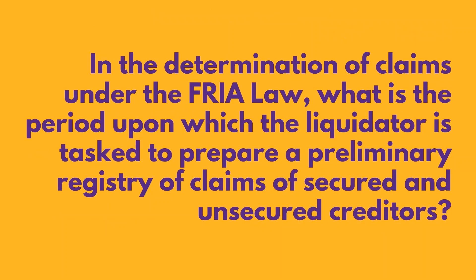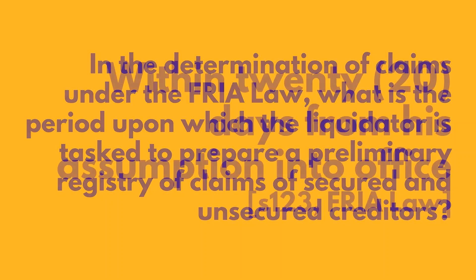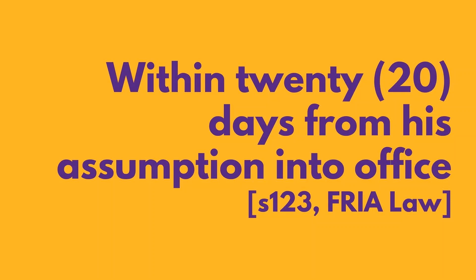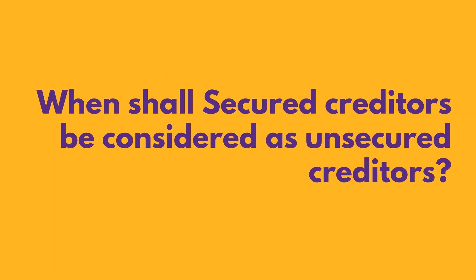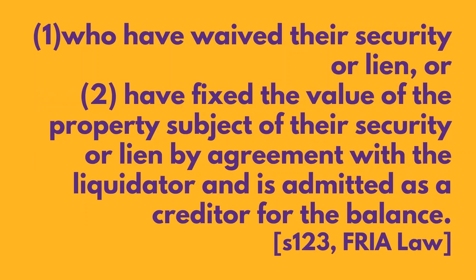In the determination of claims under the FRIA Law, what is the period upon which a liquidator is tasked to prepare a preliminary registry of claims of secured and unsecured creditors? Within 20 days from his assumption of office. When shall secured creditors be considered as unsecured creditors? First, when they have waived their security or lien. Second, when they have fixed the value of the property subject of their security or lien by agreement with the liquidator and is admitted as a creditor for the balance.